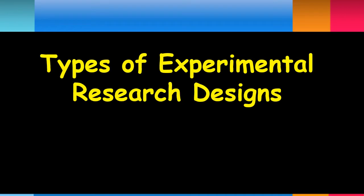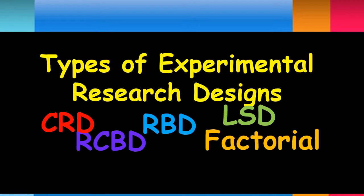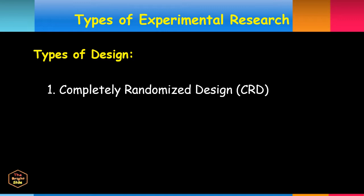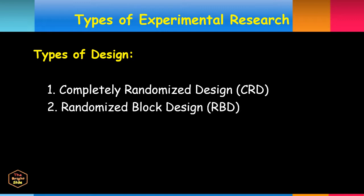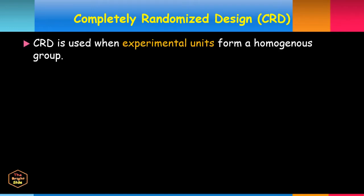There are four main types of experimental research designs: Completely Randomized Design or CRD, Randomized Block Design or RBD, Latin Square Design or LSD, and Factorial Design or FD.